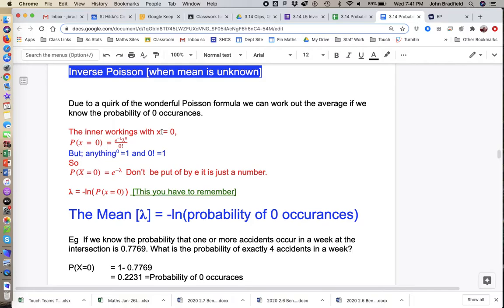So the inner workings with x equals zero, in the formula you get the mean to the power of zero, anything to the power of zero equals one. We know this from year 10 maths. On the bottom line, you get the factorial of zero, which curiously also equals one. So the formula when x equals zero, and we're looking at the probability of no occurrences, is simply this.